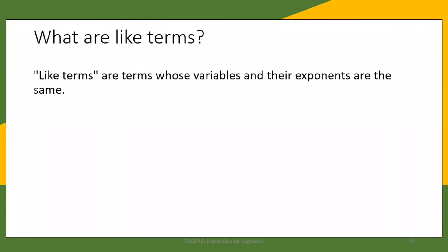As we have stated in the previous slide, the first step in the addition or subtraction of polynomials is to combine like terms. But what are like terms? Like terms are terms whose variables and their exponents are the same.